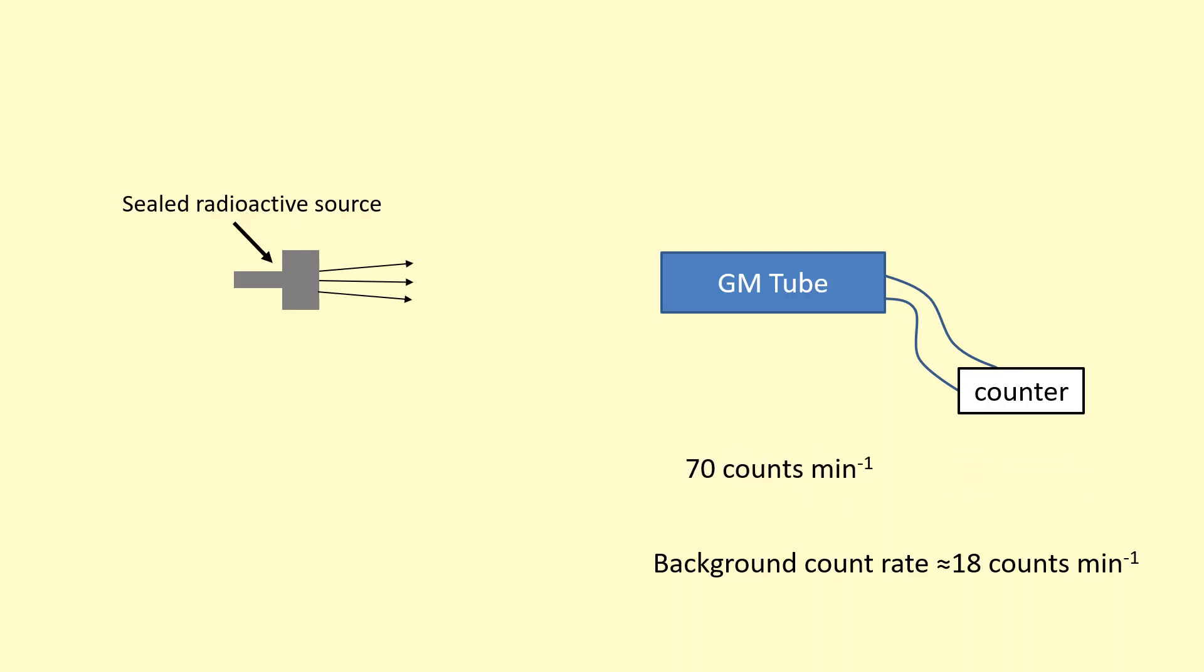So that gives me an uncorrected count rate of 70 counts per minute. Uncorrected because we haven't subtracted the background radiation from this. So this 70 counts per minute is due to the radioactive sample and the background. The corrected count rate is what we're interested in, so we're going to subtract the background radiation from that, which gives me 52 counts per minute.